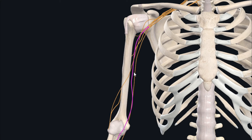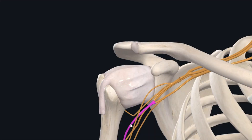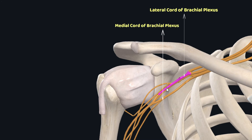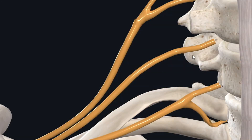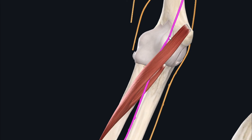The pronator teres muscle receives its nerve supply from the median nerve. The median nerve arises from both the medial and lateral cords of the brachial plexus, and receives its nerve fibers from the 7th and 8th cervical spinal nerve roots. The median nerve passes between the two heads of the pronator teres muscle to enter the anterior compartment of the forearm.